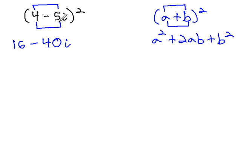And then finally, we square the last term. Negative 5 squared is positive 25i squared.